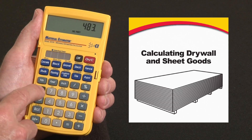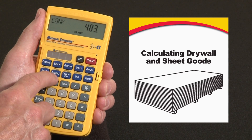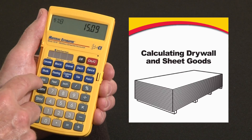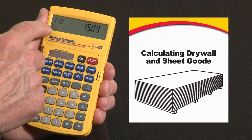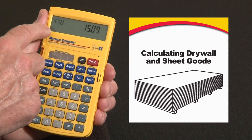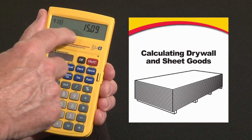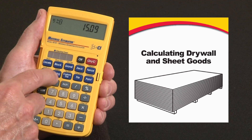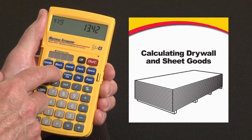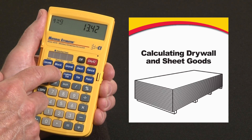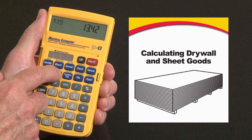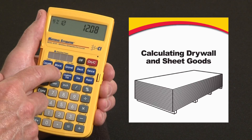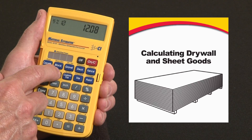Now all I do is hit convert and over the flooring key it says sheets. For 4 by 8 sheets we're going to need 15.09, so call it 16 sheets. For 4 by 9 size sheets we're going to need 14 sheets. And for 4 by 10 we're going to need 13 sheets.